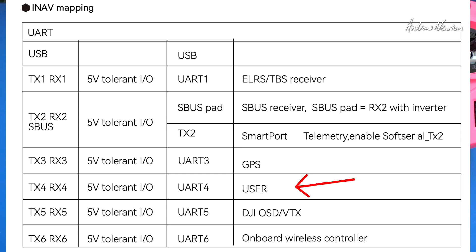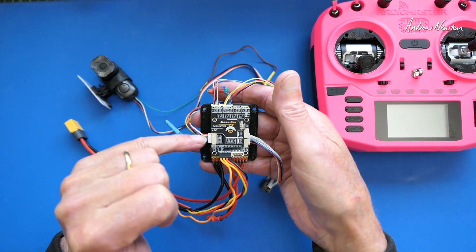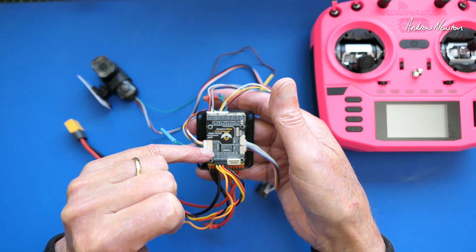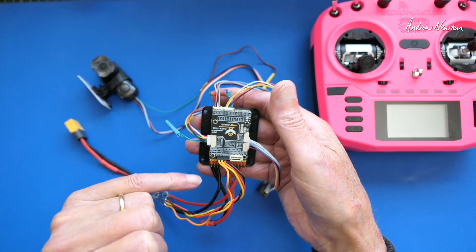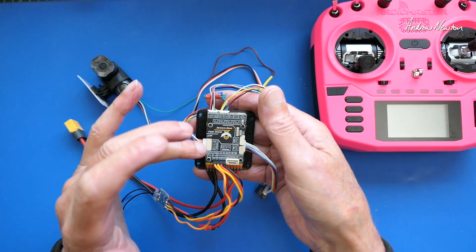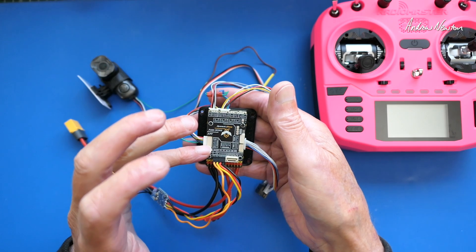UART4 is totally free, not used by anything else on the board. So I've soldered up a cable going into UART4 which is in this side plug here. This actually has UART2 and UART4 on it, but UART2 is shared by the SBUS pin and the smart port function as well. So I'm not going to use UART2.